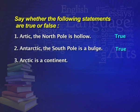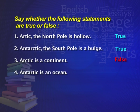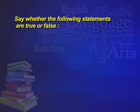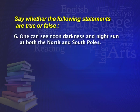Question 3: Arctic is a continent — is the statement right? No, it is false. Question 4: Antarctic is an ocean — what do you think? It is false. Question 5: Antarctic has much more ice than Arctic — can you tell if it's true or false? It is true.